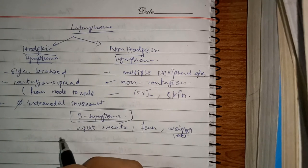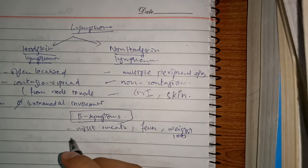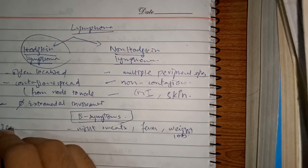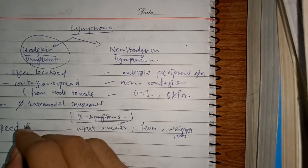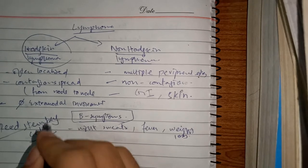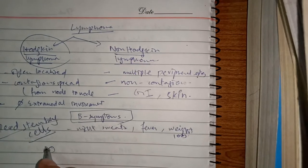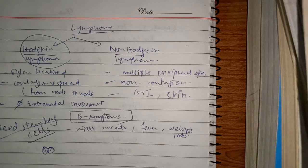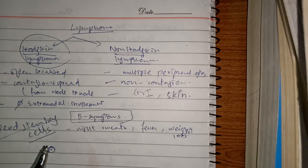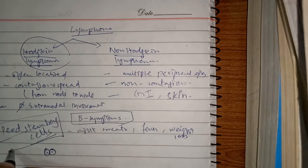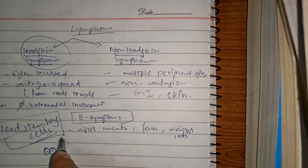The gold standard test for diagnosis is lymph node biopsy. In Hodgkin lymphoma, we see Reed-Sternberg cells, which is the most important finding. These cells have a bilobed nucleus and look like an owl's eye.